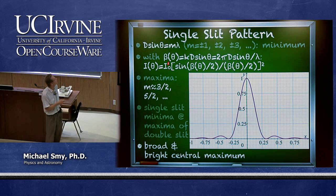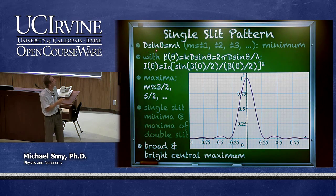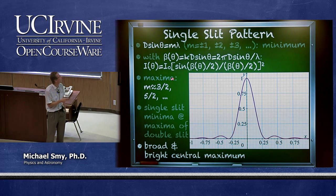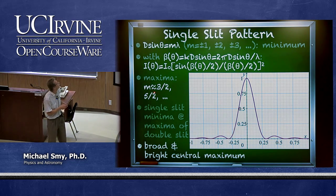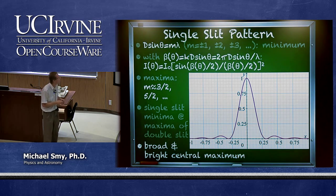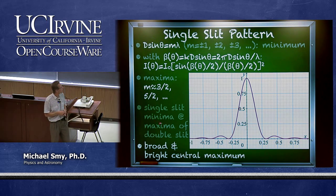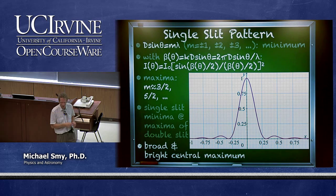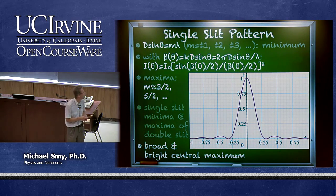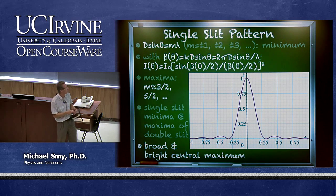What you really need to know is that there are minima for the condition d times sine theta equals m times lambda, if m is ±1, ±2, or ±3, but not 0 because 0 is the central maximum. Maxima occur approximately at 3/2, 5/2, and so on. Also note that the single slit minima are at the maxima of the Young double slit pattern.